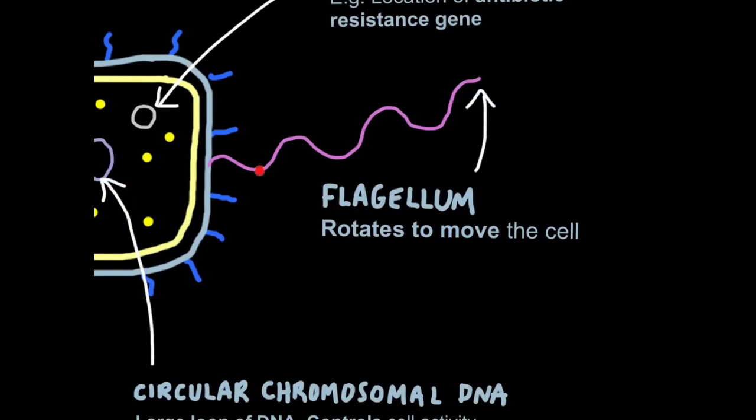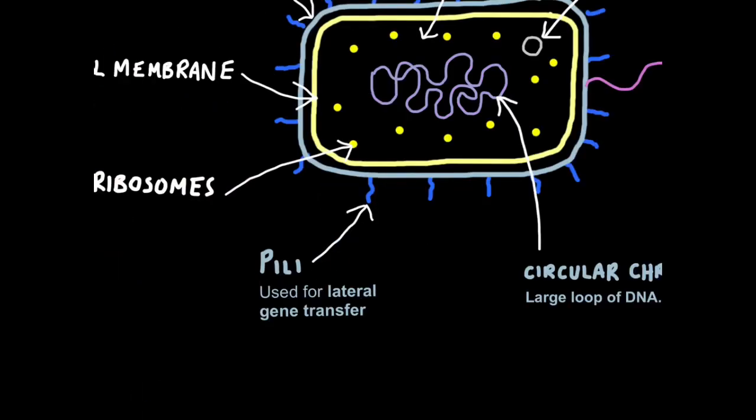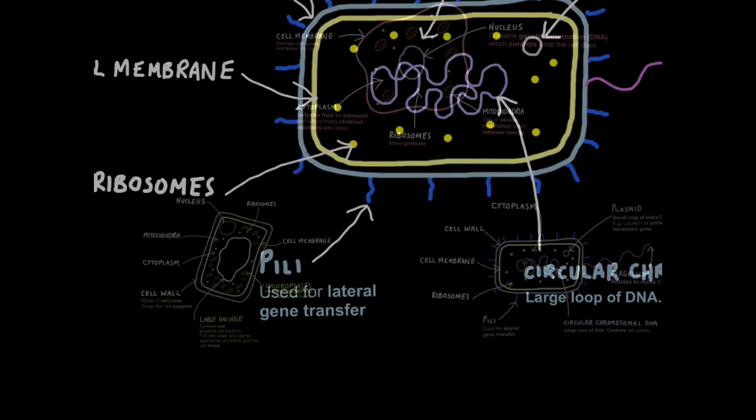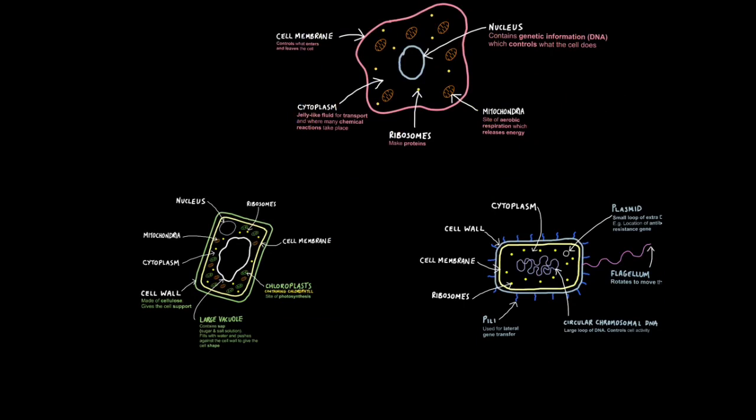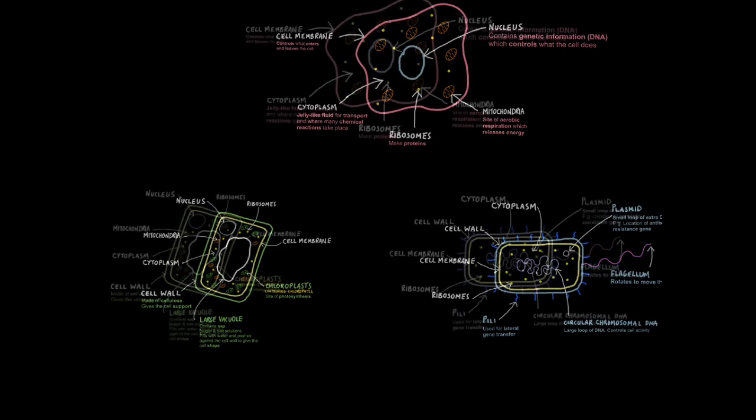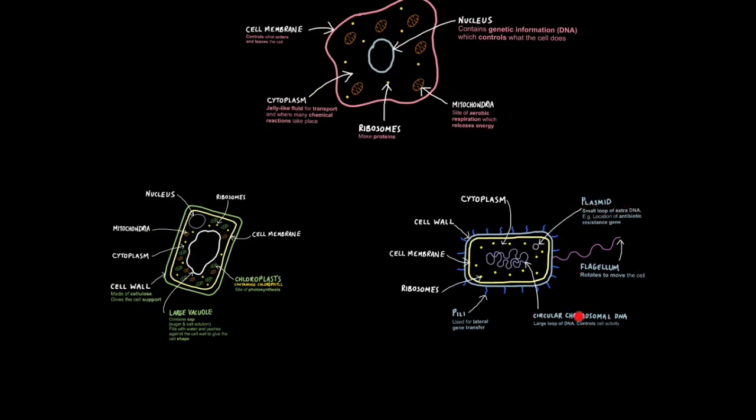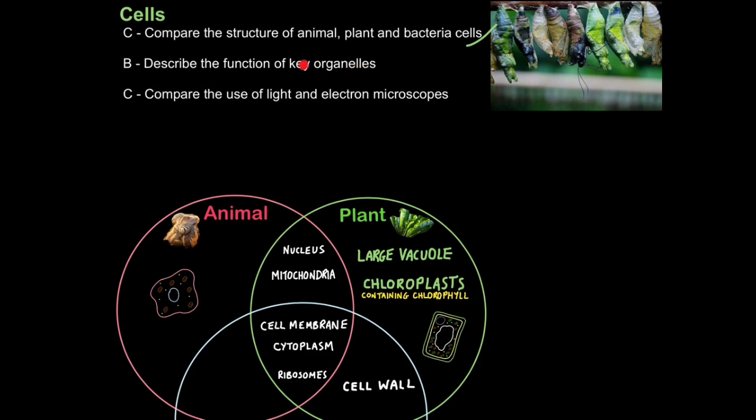The flagellum is a tail-like structure that rotates around and around like a motor to propel the cell forward, so it allows the cell to move. And the pili, as I've already discussed, are used for lateral gene transfer, so bacteria have the ability to exchange things, like their plasmids, between each other through their pili. This is why antibiotic resistance can spread so quickly in bacteria. The key organelles I'd commit to memory are the nucleus, mitochondria, ribosomes, chloroplasts, the vacuole and cell wall relationship, plasmids, flagellum, and circular chromosomal DNA. The rest is less likely to come up. And that is how we describe the function of key organelles.